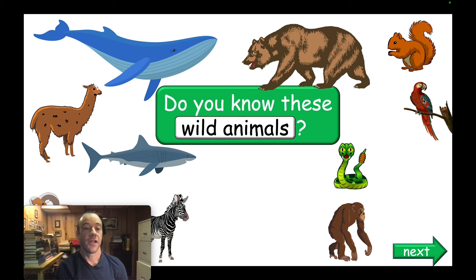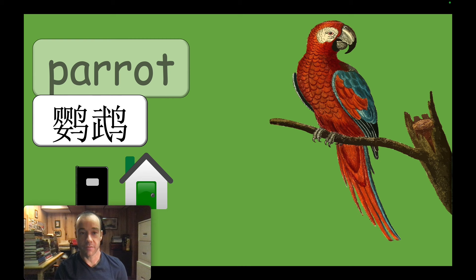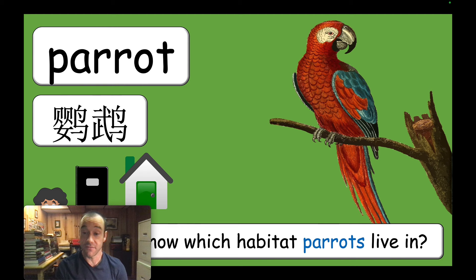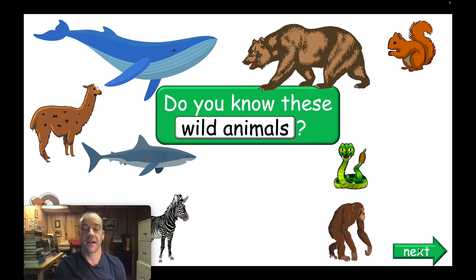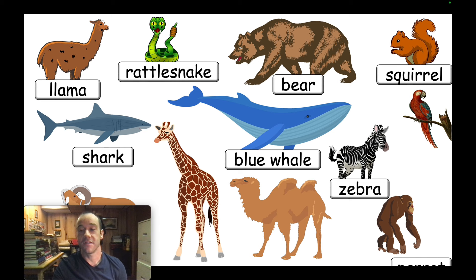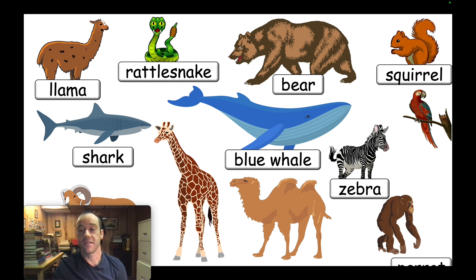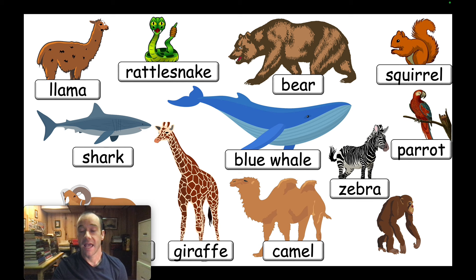You can keep going through all of these. Do it as a spelling activity, make sure you drill their pronunciation, and have them guess which habitat each animal lives in. Once all of these are done, go back to the screen and click next. Then go through and say all of them one more time: llama, rattlesnake, bear, squirrel, shark, blue whale, zebra, parrot, bighorn sheep, giraffe, camel, and chimpanzee.